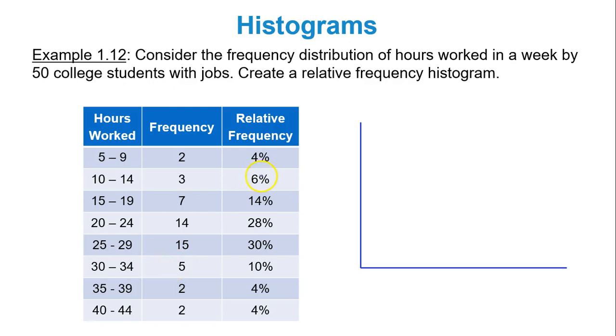Consider the frequency distribution of hours worked in a week by 50 college students with jobs. Create a relative frequency histogram. So in this specific case, notice that we have classes anywhere from 5 all the way up to 44 hours a week. That's how much these students are working. So what I'm going to do is label my x-axis hours worked, or just hours. My title will be hours worked.